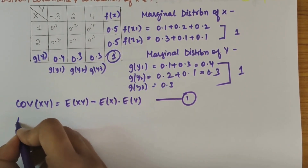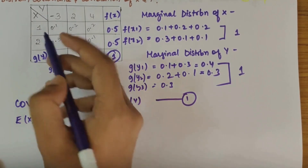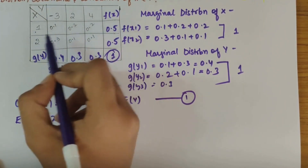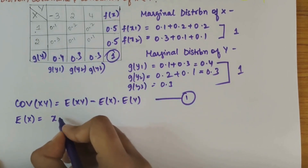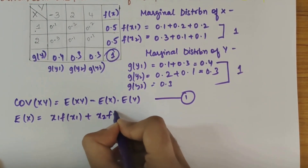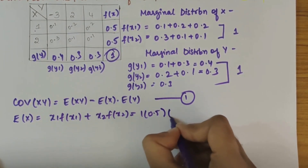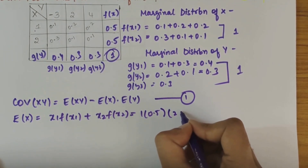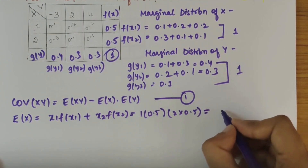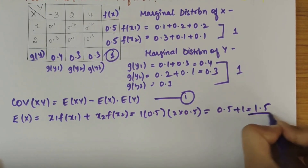First let's find E(x). E(x) is x into f of x, so x1 into f of x1 plus x2 into f of x2, that is 1 into 0.5 and 2 into 0.5. We get 0.5 plus 1, that is 1.5.